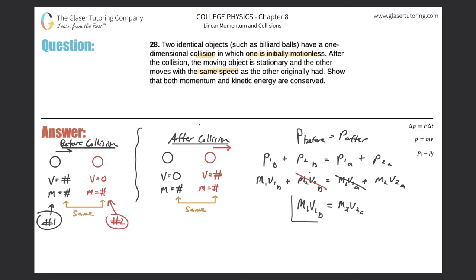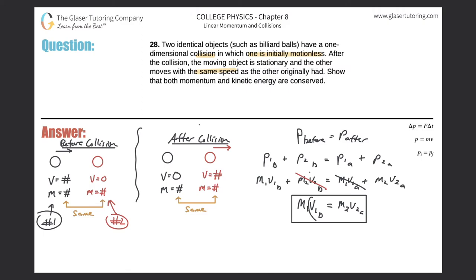We have to verify whether this is true. Are the masses the same? Yes — they told us they were identical objects. Are the velocities the same? Yes — the problem states the other moves with the same speed as the first originally had, meaning the initial velocity of object one before the collision equals the final velocity of object two after the collision. So this is definitely true, and momentum conservation is proved.